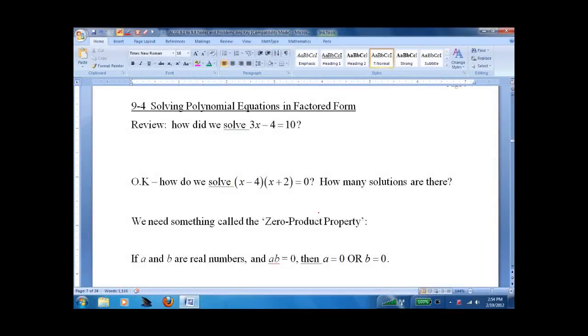Lesson 9 for solving polynomial equations in factored form. So how do we solve 3x minus 4 equals 10? Most people remember we add 4 to both sides and divide by 3. x equals 14 over 3, and we can plug it back in and see that it works. When we do that, give it a little check mark.